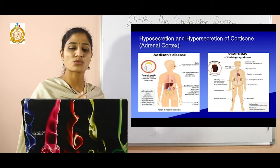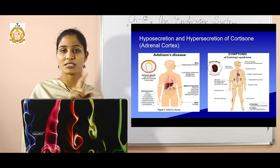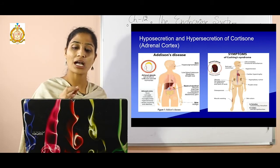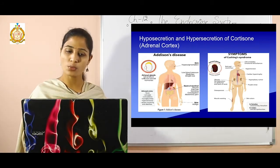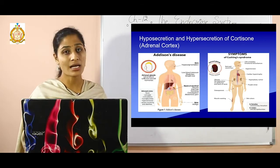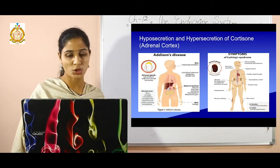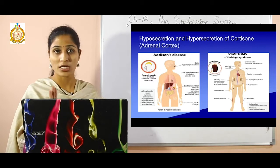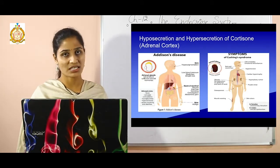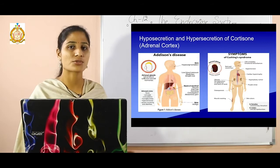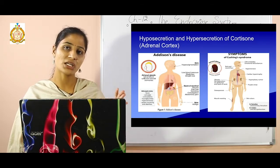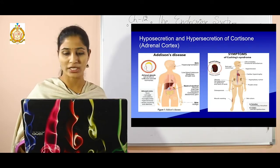Hyposecretion of cortisone leads to Addison's disease. Symptoms of Addison's disease include hyperpigmentation of the skin, low blood pressure, weakness, and weight loss. Hypersecretion of cortisone leads to Cushing's syndrome, which causes a red and round face as well as obesity — fat deposition in the body. Both conditions are not good, so hormones should circulate in normal amounts.